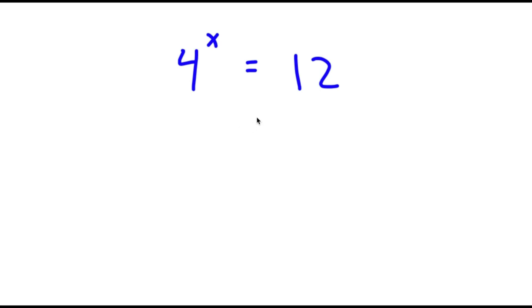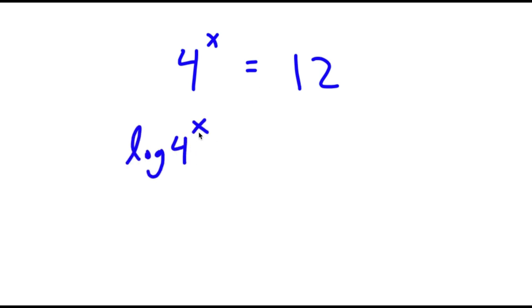In this problem, I have 4 to the power of x is equal to 12. To solve this, I'm going to first start by taking the log on both sides. So now I have log 4 to the power of x is equal to log 12.